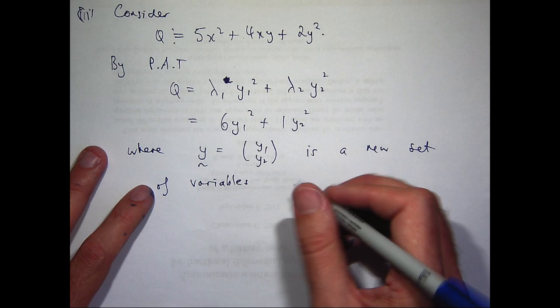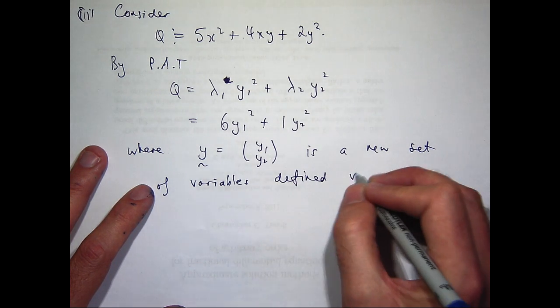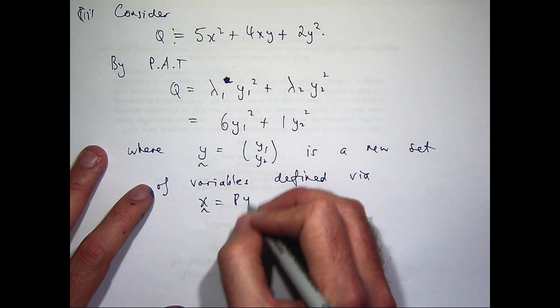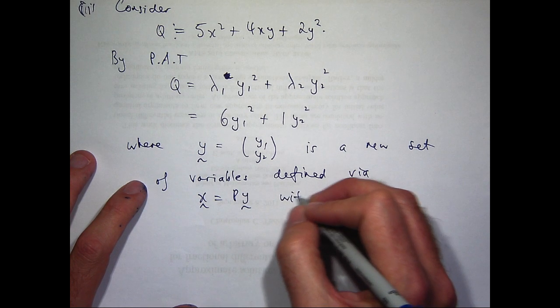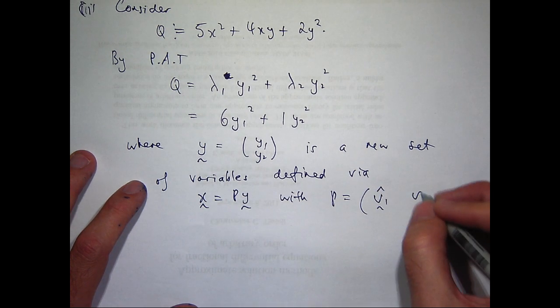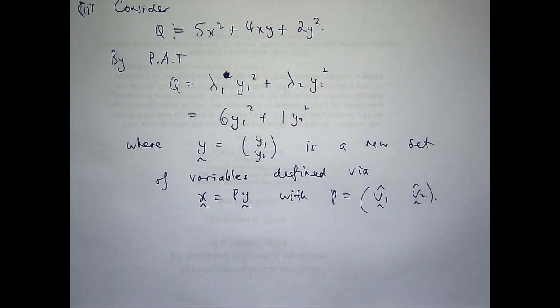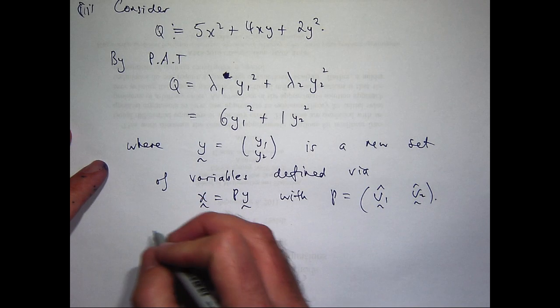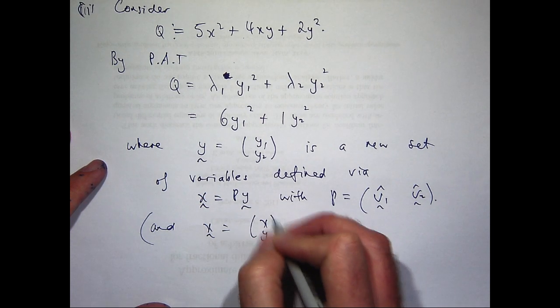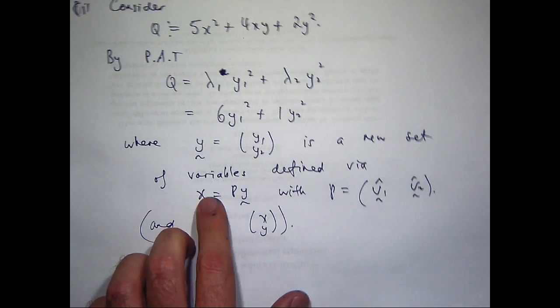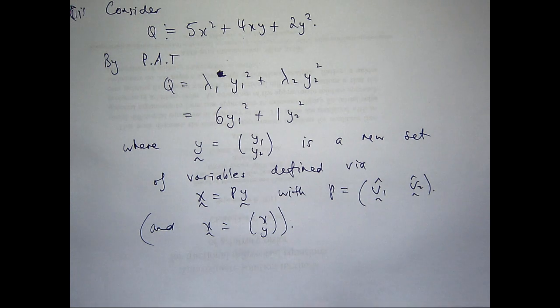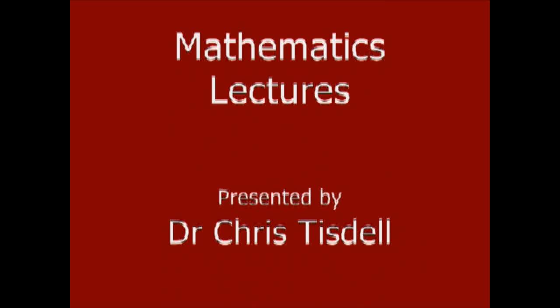Now, just to give you a little bit of extra insight there, I've written down the relationship between the original variables and these new set of variables. They're related by this substitution, where P is a so-called orthogonal matrix that can be formed from normalizing the eigenvectors and writing them as a matrix.